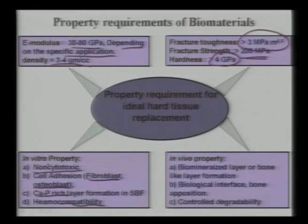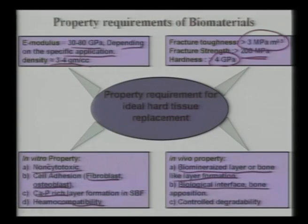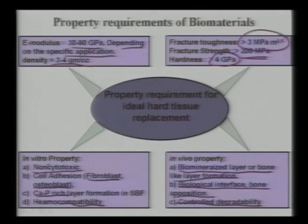In vivo properties include bio-mineralized or bone-like layer formation, a good biological interface with bone apposition, and controlled degradability. When a biomaterial is implanted, it should promote neo-bone formation — new bone that did not exist before implantation. If neo-bone forms, the material has good in vivo biocompatibility. This provides an overall view of the different property requirements for biomaterials.